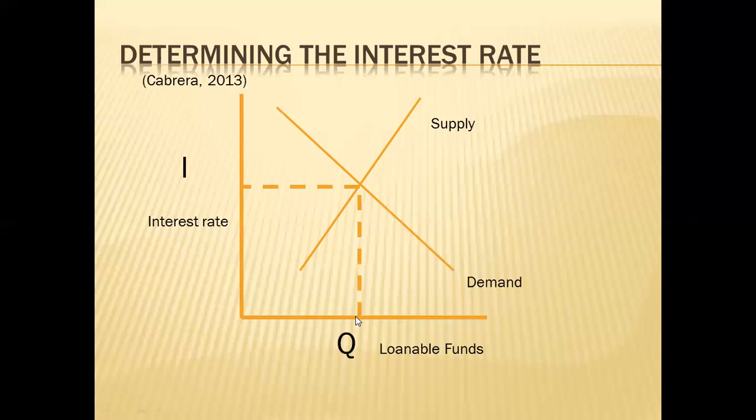The interest rate also rewards lenders — people willing to reduce their current consumption in order to provide loanable funds to others. If some people borrow to undertake an investment project or consume more than their current income, others must curtail their current consumption by an equal amount.